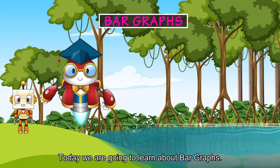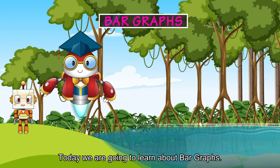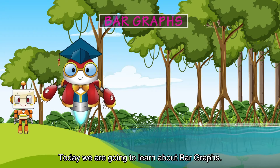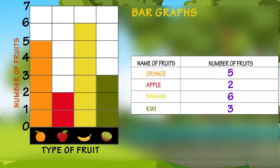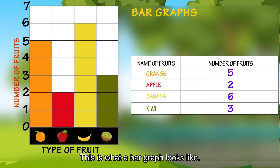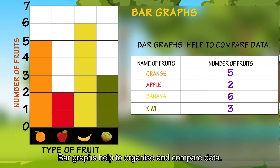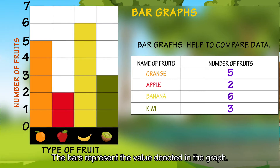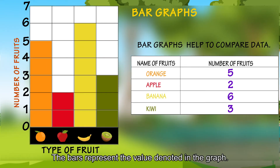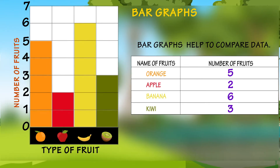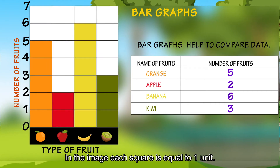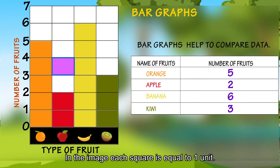Today we're going to learn about bar graphs. This is what a bar graph looks like. Bar graphs help to organize and compare data. The bars represent the value denoted in the graph. In the image, each square is equal to one unit.